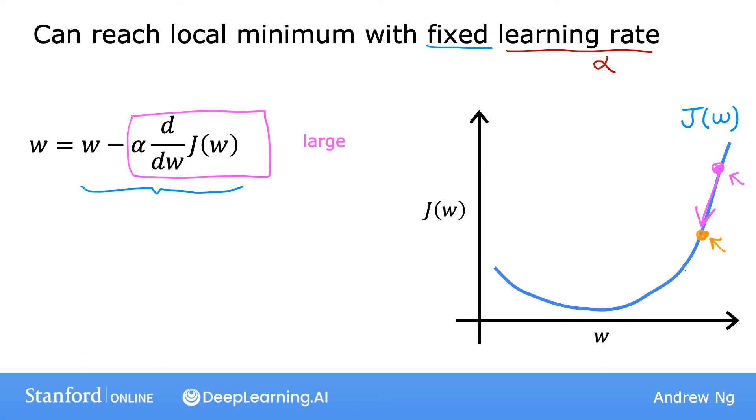Now, we're at this second point, where we take another step, and you may notice that the slope is not as steep as it was at the first point, so the derivative isn't as large, and so the next update step will not be as large as that first step. Now, we're at this third point here, and the derivative is smaller than it was at the previous step, and we'll take an even smaller step. As we approach the minimum, the derivative gets closer and closer to zero, so as we run gradient descent, eventually we're taking very small steps until you finally reach a local minimum.